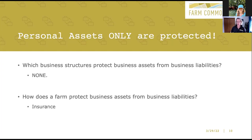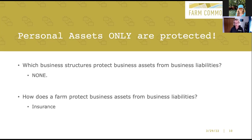Which business structure protects business assets from business liabilities? None of them. Business assets are always available to satisfy a business liability, and no business structure can protect business assets from business liabilities. How do we protect business assets? Insurance. Folks get liability insurance coverage so that they have someone who will help defend against and pay out on resulting business liabilities so that their business assets aren't taken. Insurance and LLCs or corporations serve two completely different roles on the farm. The LLC and the corporation protect personal assets; insurance protects business assets.